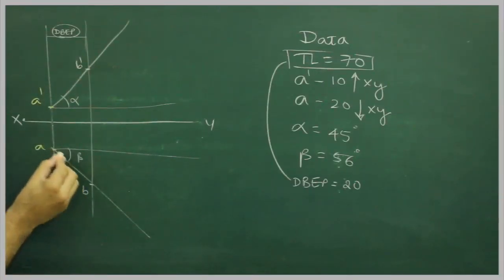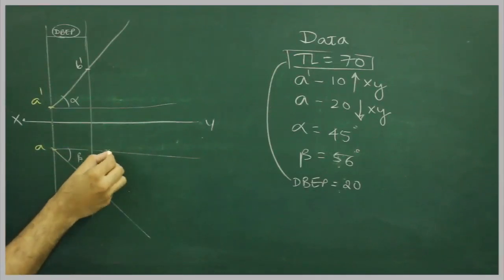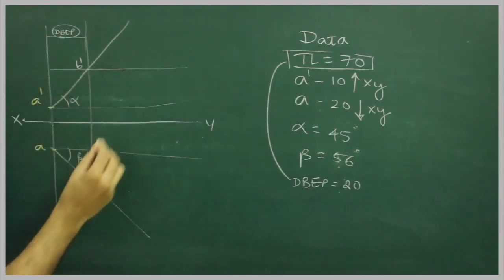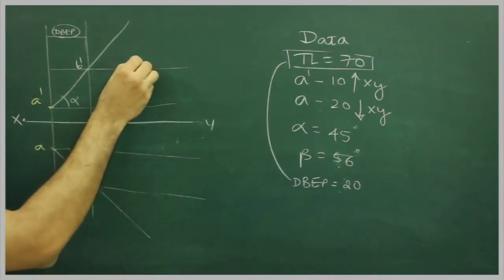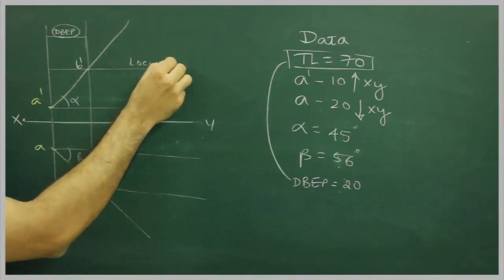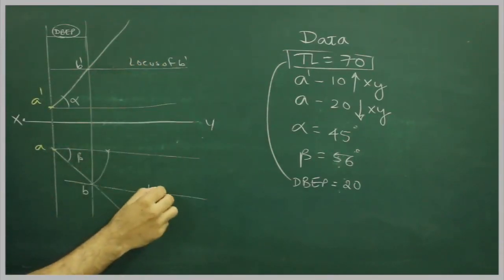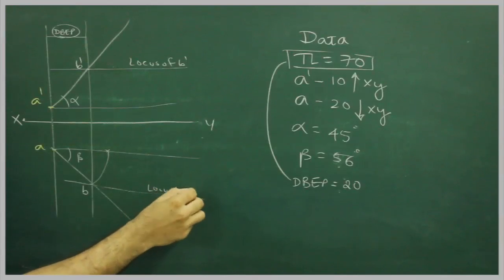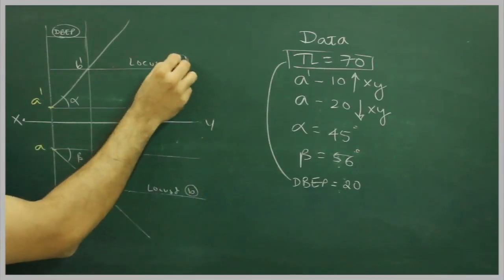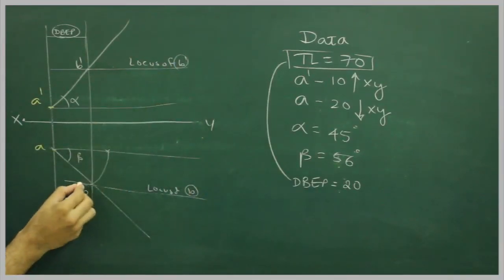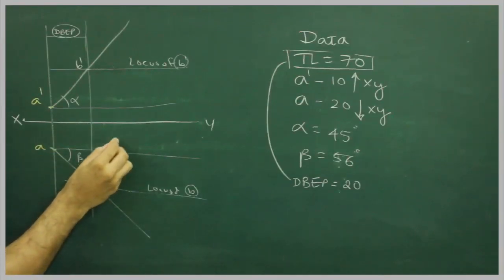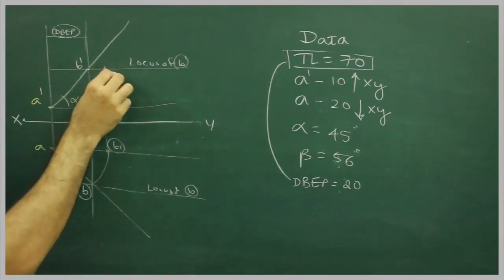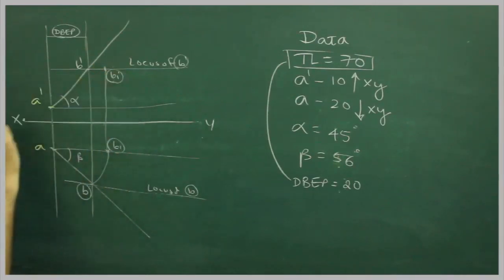Now, we know, take A to B, rotate till here. So, first we will draw locus. This is locus of d dash, locus of B, but the assumed one. So, we will take B, A to B, rotate it here, B1, we will link this up, so wherever it will cut, that is B1 dash, assumed one.